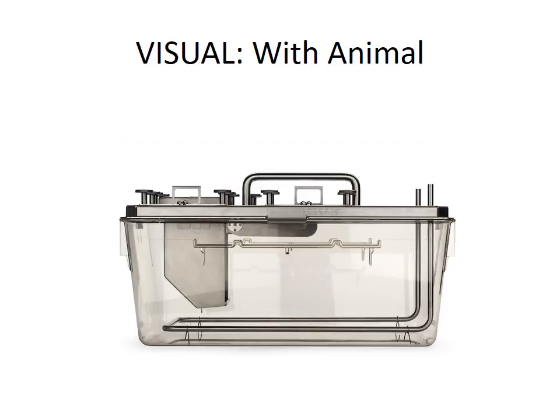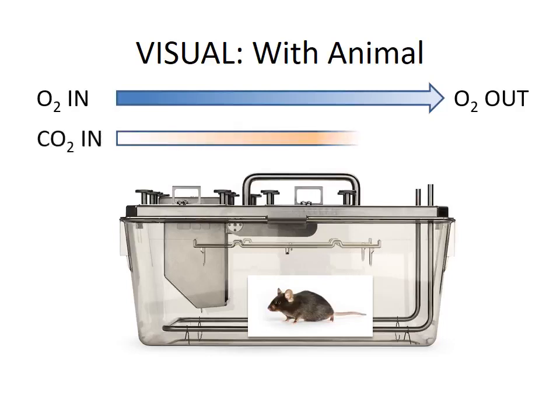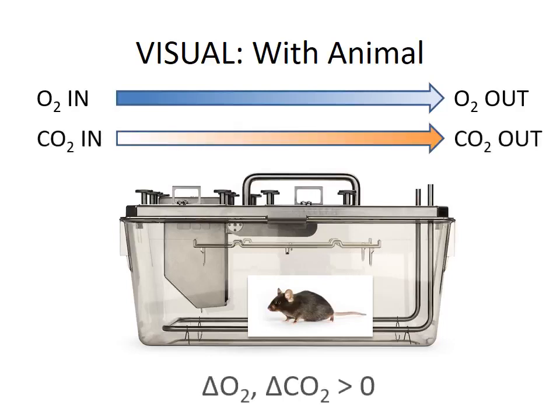Now let's repeat this with an animal. Here we put in a mouse, our old friend the black six. Oxygen going in is now higher than oxygen going out because the mouse has consumed oxygen. Likewise, CO2 going in is lower than CO2 coming out because the animal has produced CO2, leading to a delta-O2 and delta-CO2 that are both larger than zero.